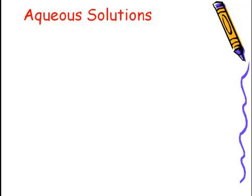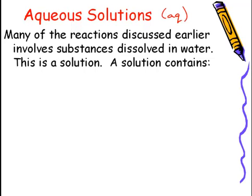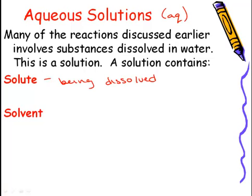Many of our reactions that we've discussed earlier involve substances that are dissolved in water — these are aqueous solutions. In Video Lecture 1, we saw that we use AQ to distinguish the fact that the substance is aqueous. An aqueous solution where something is dissolved in water is made up of two things: a solute and a solvent. The solute is the substance that's being dissolved, while the solvent, if the solution is aqueous, is usually water.